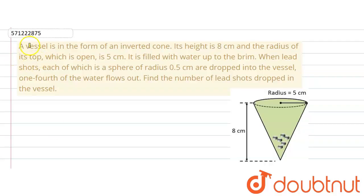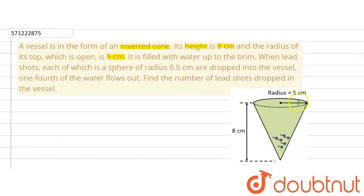The given question says that a vessel is in the form of an inverted cone. Its height is 8 cm and the radius of its top, which is open, is 5 cm. So we are given a conical vessel in the form of an inverted cone with radius 5 cm and height 8 cm.